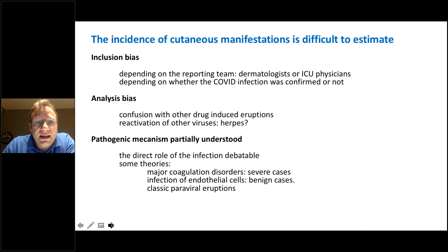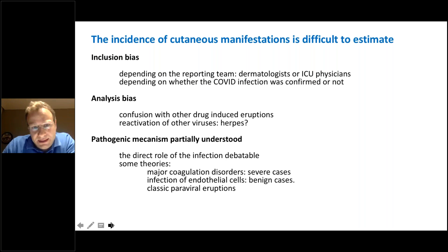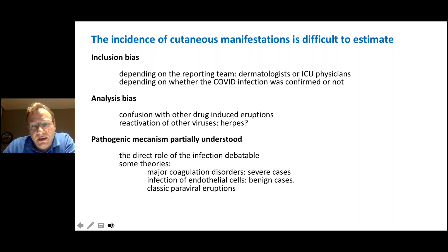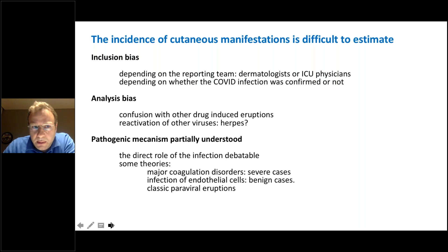ICU physicians don't have real experience in skin symptoms and signs, so they call it a rash or dermatitis. But if dermatologists are reporting the manifestations, we have increased incidence and really very specific signs and symptoms. Second bias is whether the COVID infection was confirmed or not. Sometimes we have suspected COVID infection but the PCR is negative, and the PCR sensitivity is not very high — around 70%. We have multiple publications that did not differentiate between confirmed or not confirmed COVID infection.